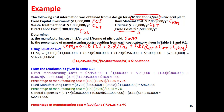We put all the information in: fixed capital cost (FCI), operating costs, utility, waste treatment, and raw material cost (C_RM). When you do that, you get approximately 14 million dollars per year. All values are in dollars per year.